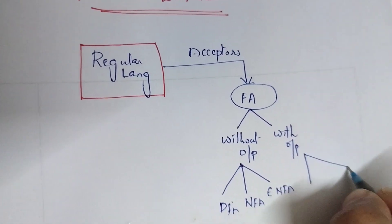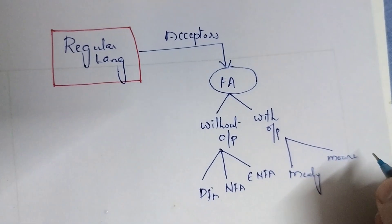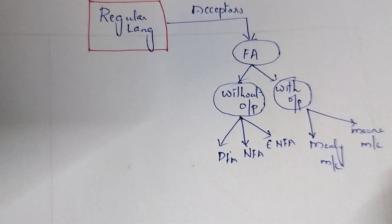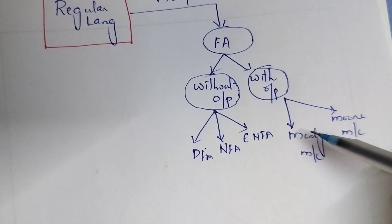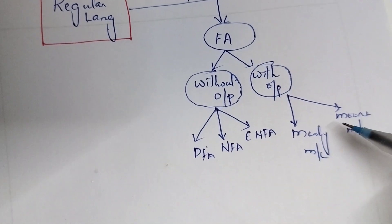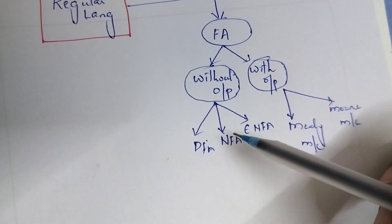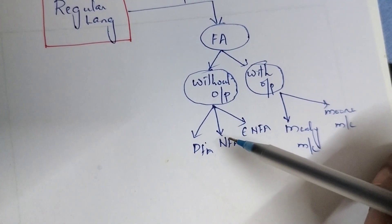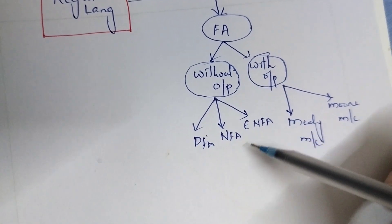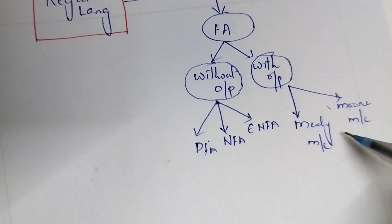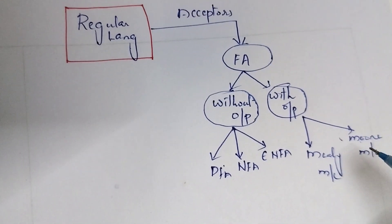The with-output category has two types: Mealy machine and Moore machine. We discussed how to construct a DFA, NFA, epsilon-NFA, Mealy machine, and Moore machine, and we saw that all the automata have equal power. We can convert NFA to DFA, epsilon-NFA to NFA, epsilon-NFA to DFA, and Mealy to Moore. All those conversions were covered in the previous unit.